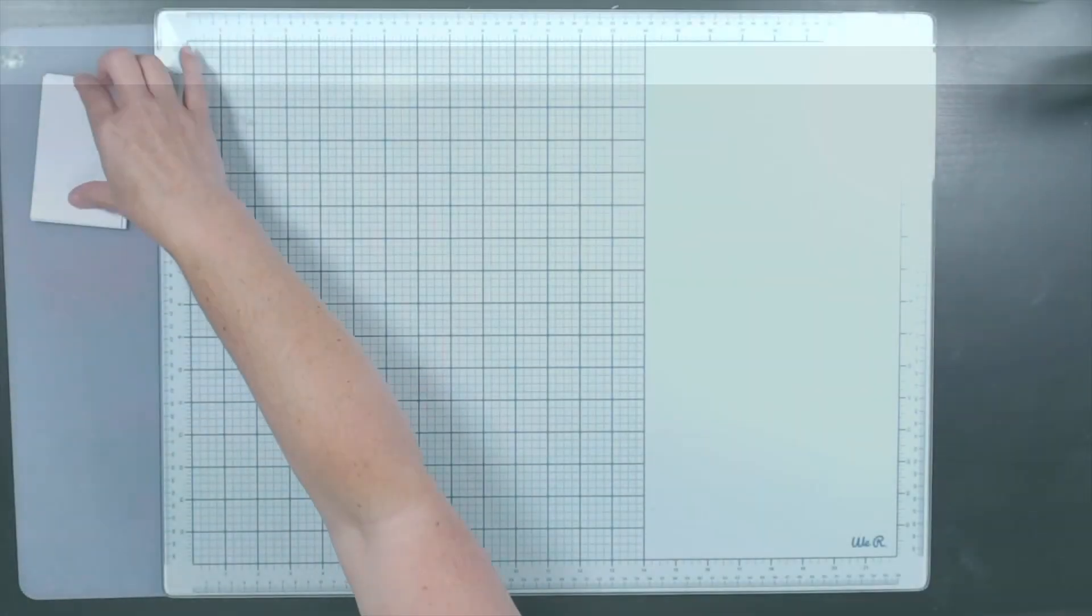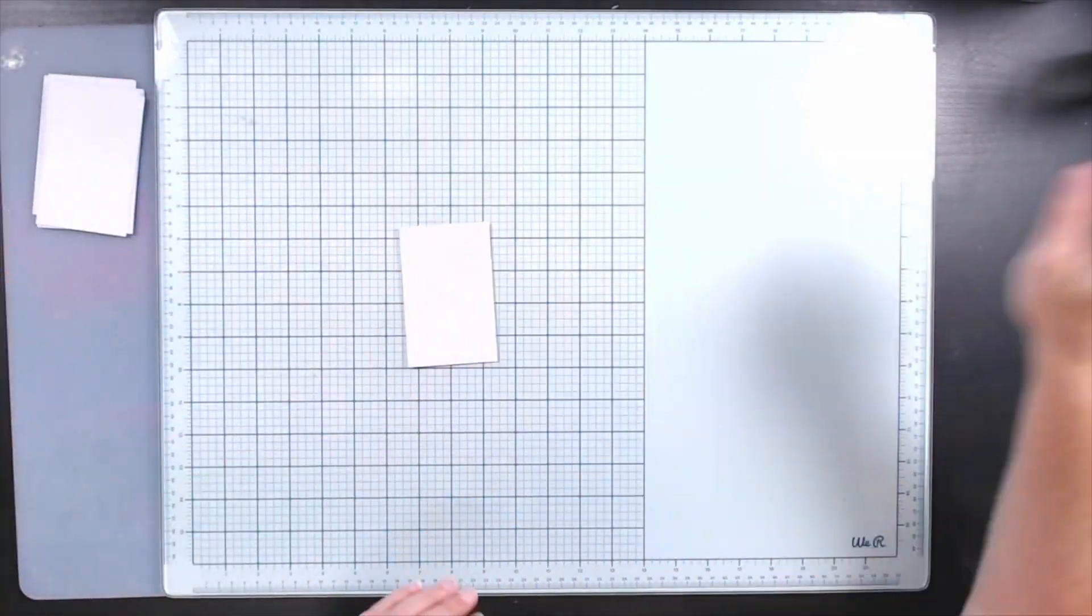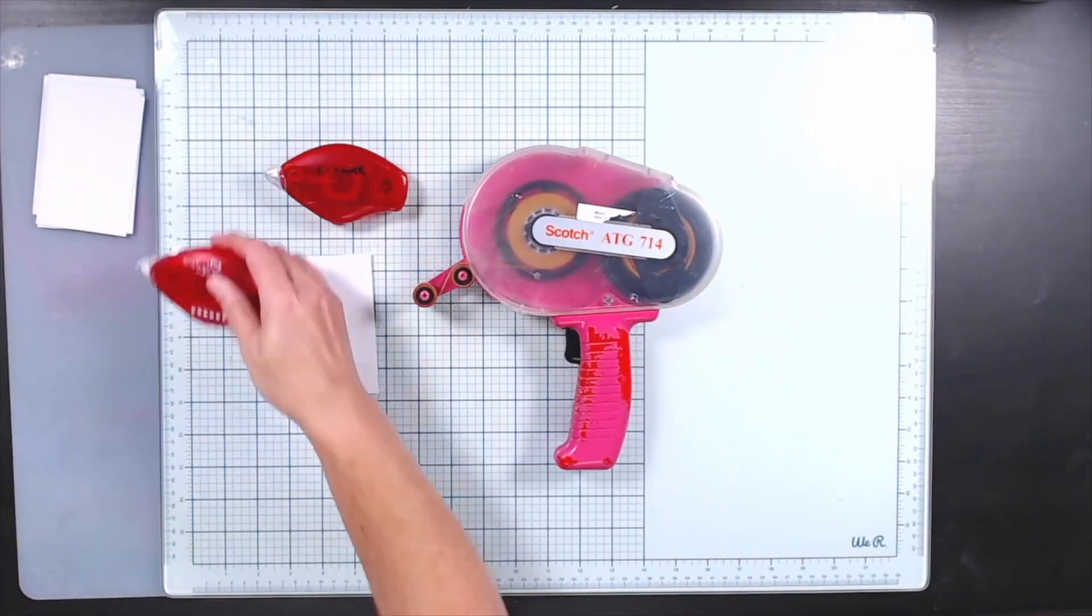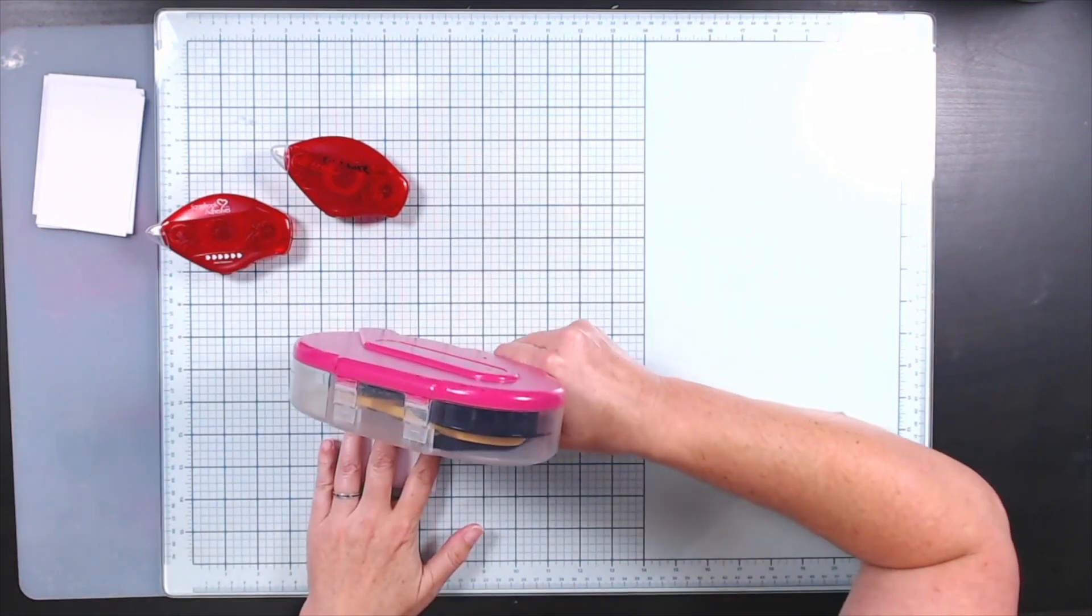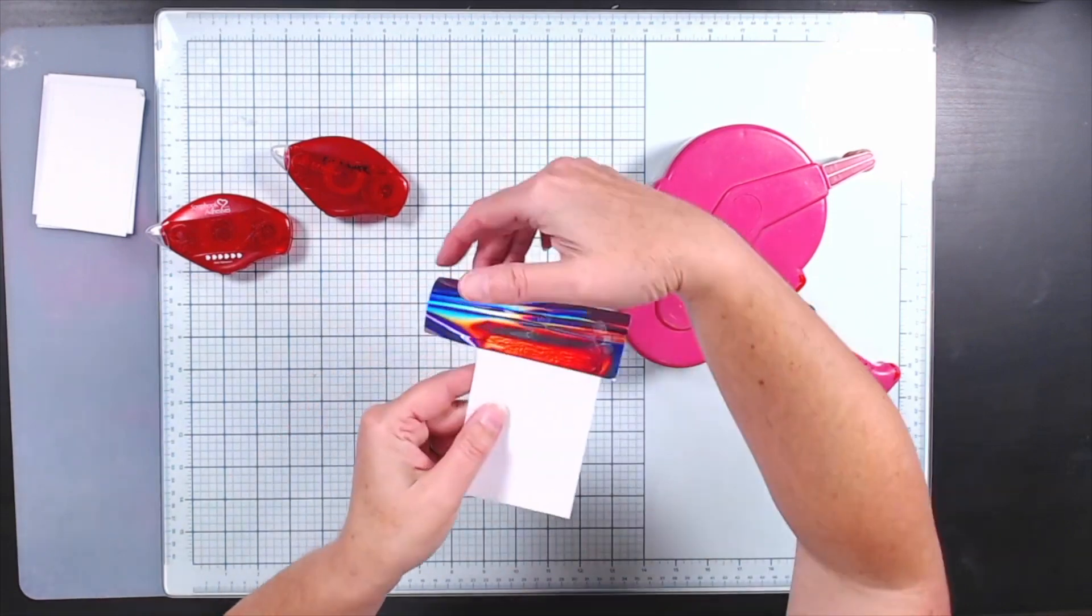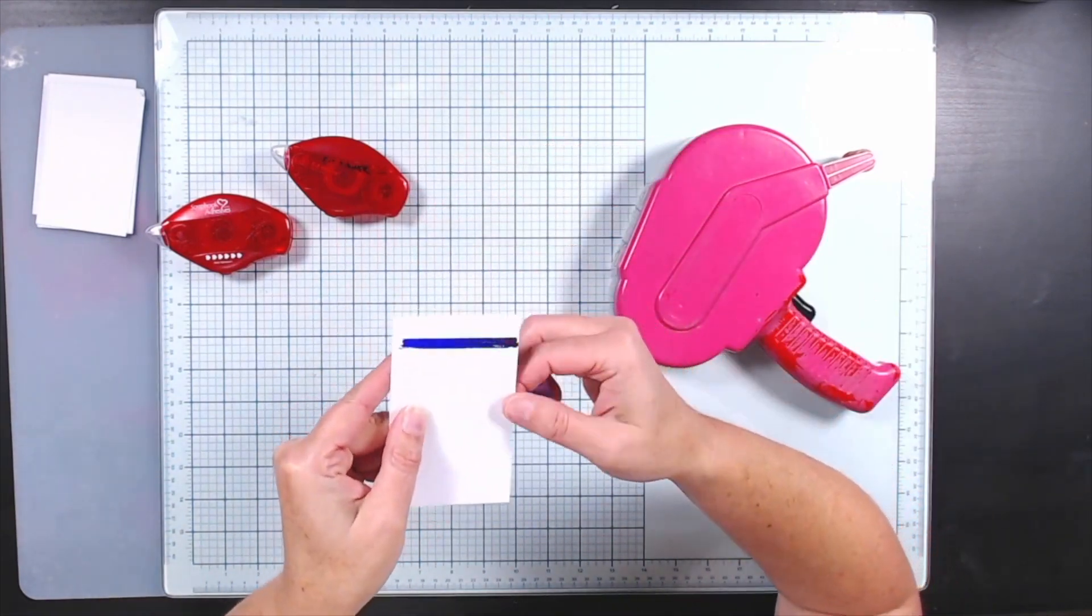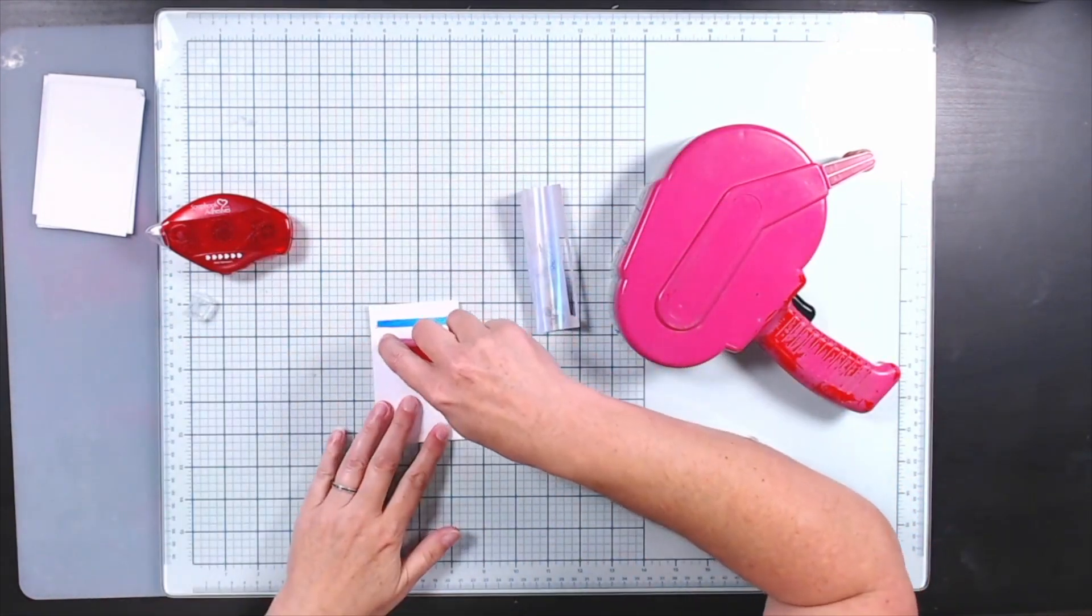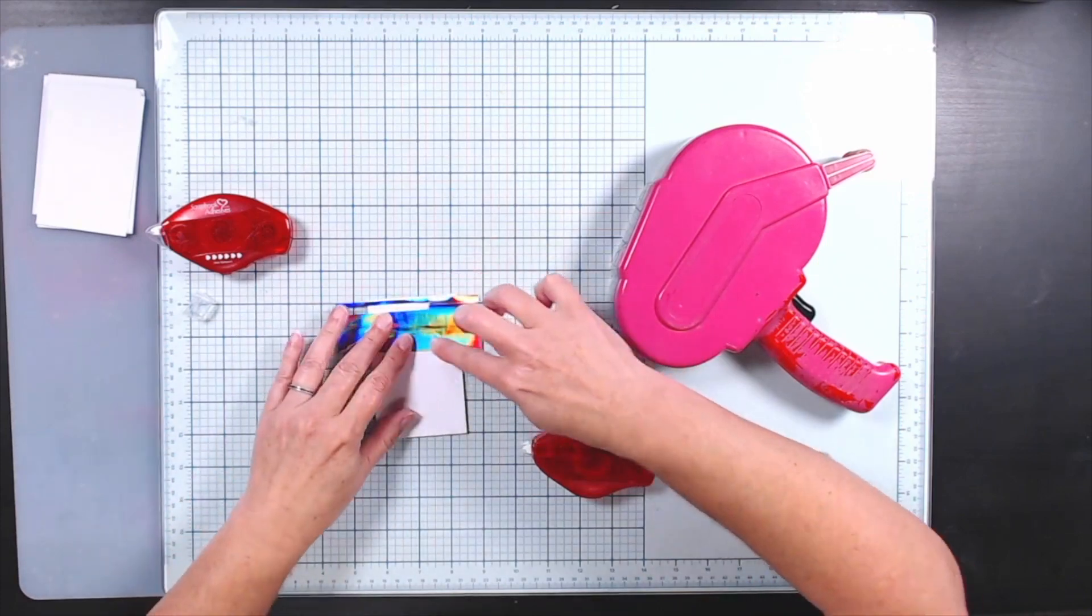All right, with the basics down, let's go ahead and add that foil to our projects. The best way to start is just with the tape runners and adhesives that you already have on hand. I have a variety of tape runners here, even a specialty shaped tape runner.